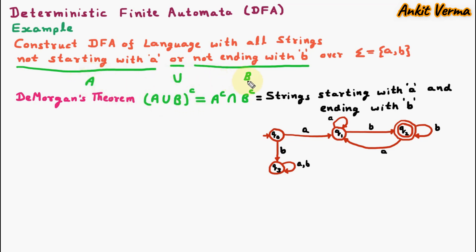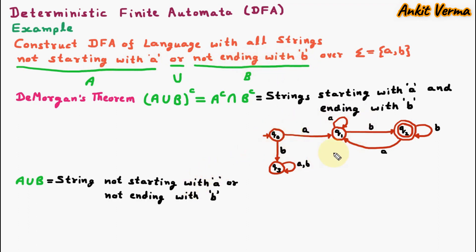But we want the DFA for A union B, which is strings not starting with A or not ending with B. We have the DFA for A union B complement, and we want A union B, which means this should be complemented. When a DFA is given and we want its complement, we need some conversion. First, we convert final states to non-final states.